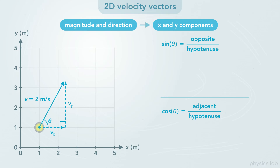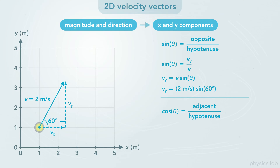But we need to be given an angle theta. In this case, theta is 60 degrees. Sine of theta equals the opposite side divided by the hypotenuse. vy is the opposite side from the angle, and v is the hypotenuse. If we rearrange this equation, vy equals v times the sine of theta. If we plug in 2 meters per second for v and 60 degrees for theta, we find that vy is 1.7 meters per second, as long as our calculator is set to degrees instead of radians.